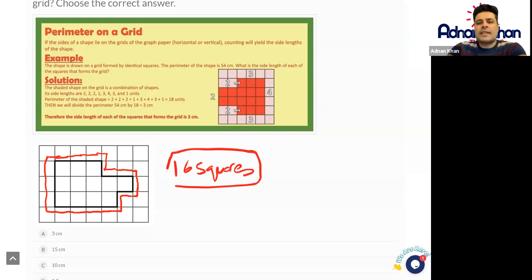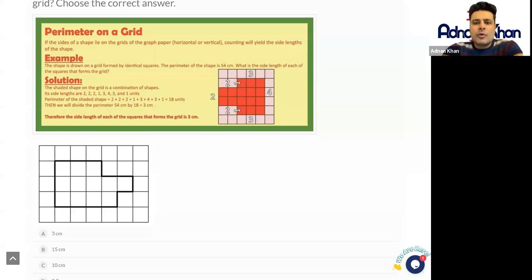All together, okay, so 16 is basically the perimeter of this particular shape. Another way to do this is also just look at the corners. So 1, 2, 3, 4, 5, 6, 7, 8, 9, 10, 11, 12, 13, 14, 15, 16 is the number of squares all the way around this particular shape.